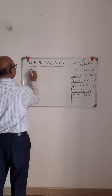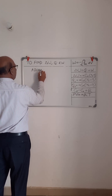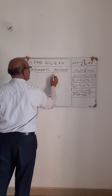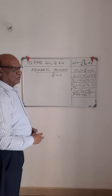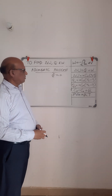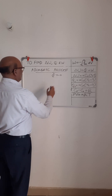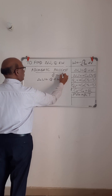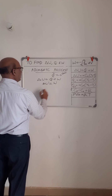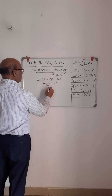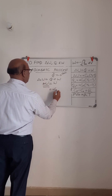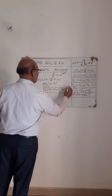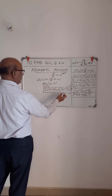Now let's do the adiabatic process. In an adiabatic process, there is no heat exchange between the system and surroundings — the boundary walls are perfectly insulated. Applying the first law: delta U equals Q plus W, and since Q equals zero, delta U equals W. Delta U for all processes is NcV(T2 minus T1), so the work done for the adiabatic process equals NcV(T2 minus T1).